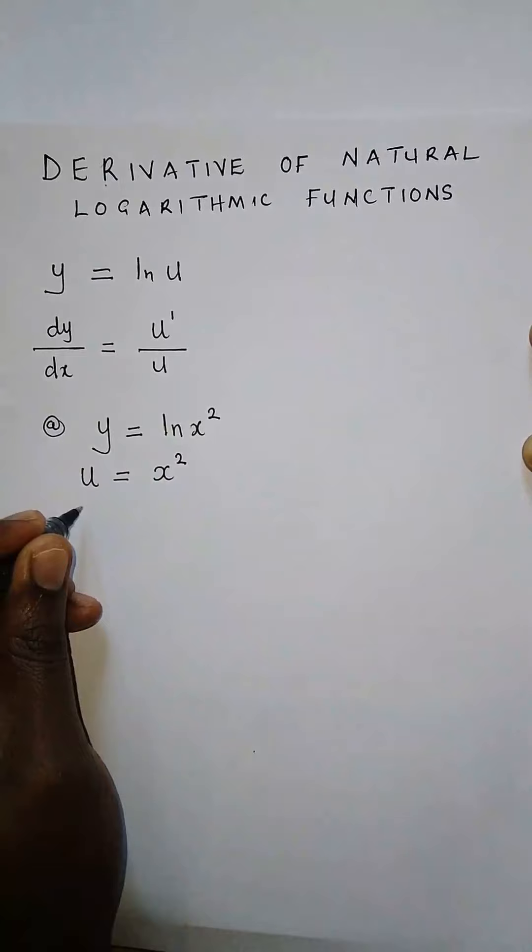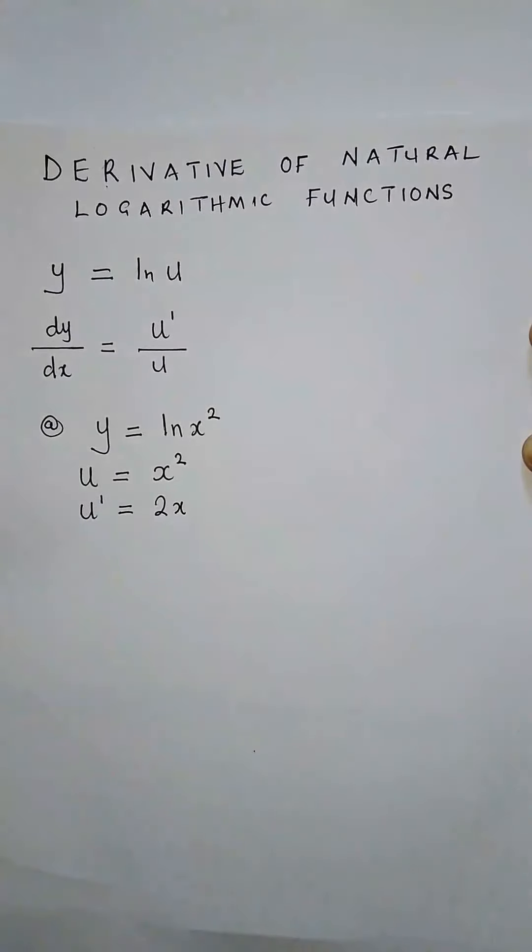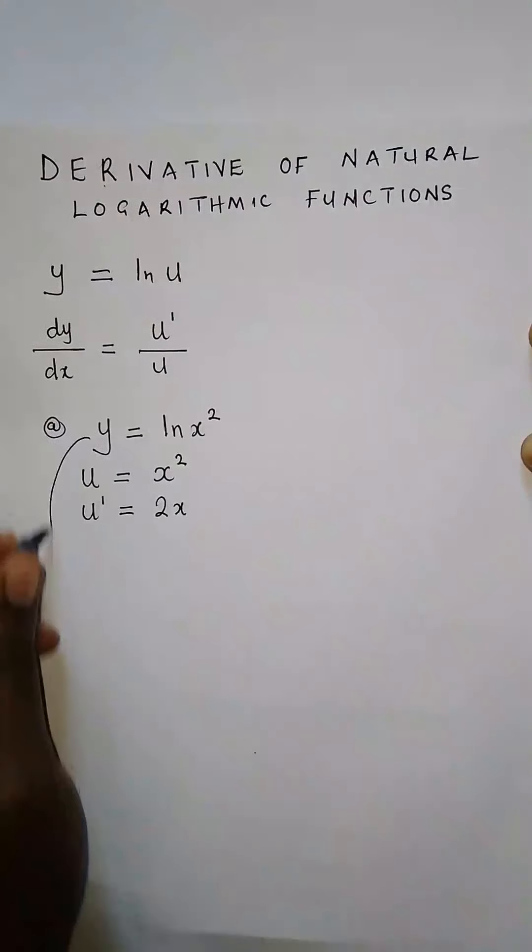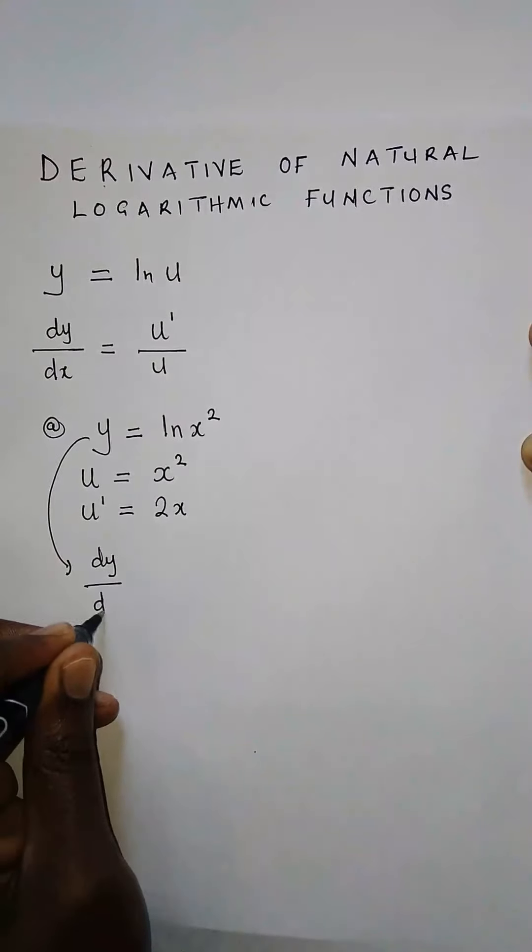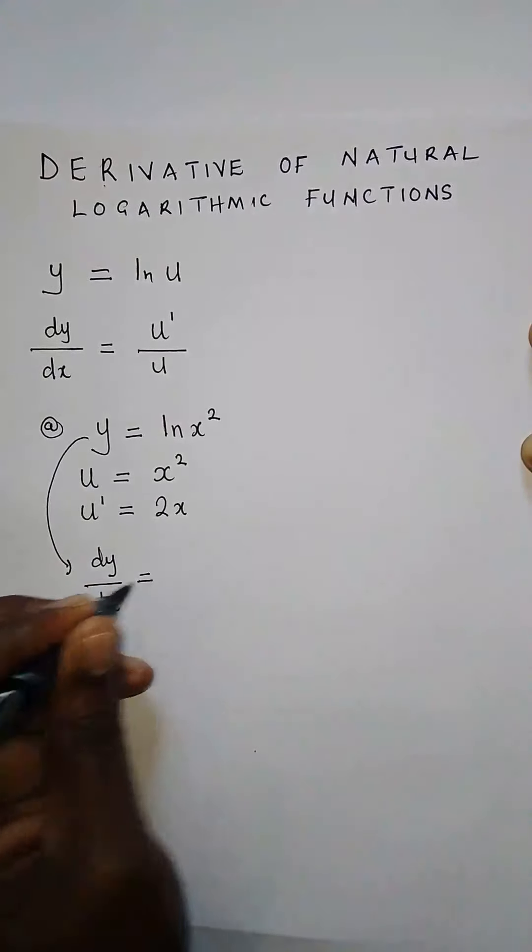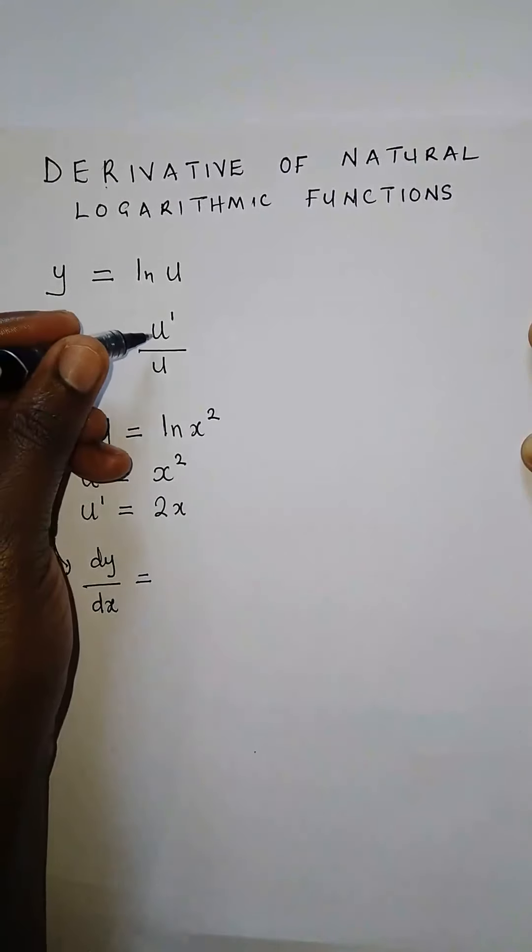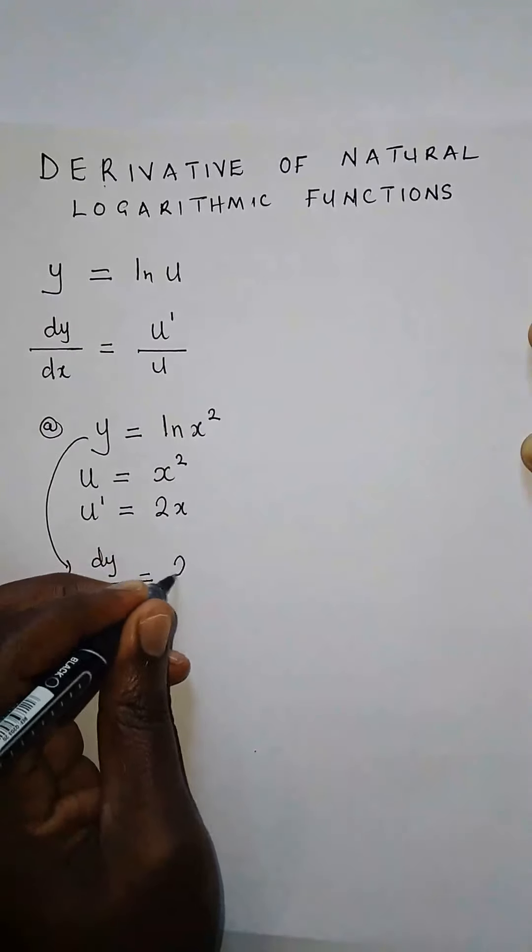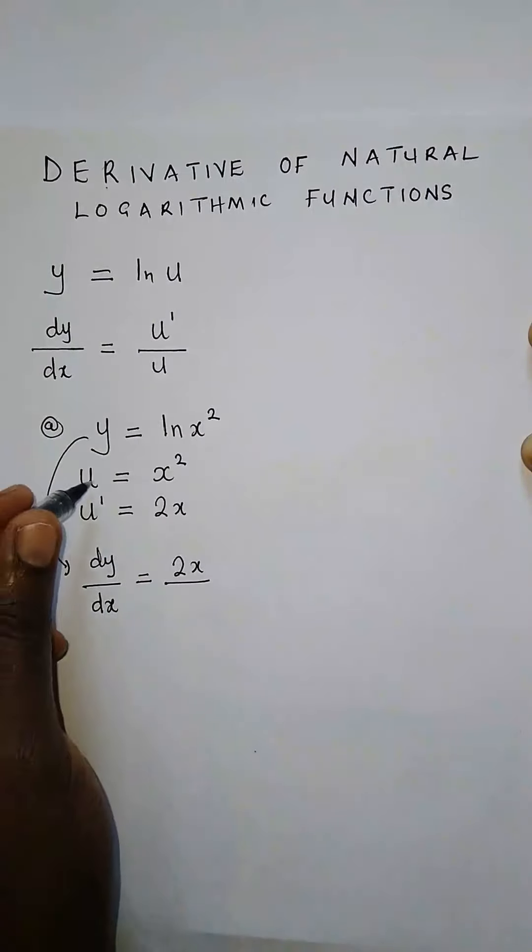We can find u prime, and u prime is simply du/dx. So u prime equals 2x. What is the derivative of this entire function? We're saying dy/dx equals u prime over u. Our u prime was 2x, and u is x squared.